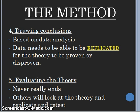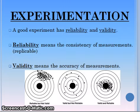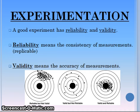We'll talk about this when we look at specific studies in class. Experimentation has to be replicable — other researchers can and should retest your procedure and get a valid outcome. We also look at the ecological validity of an experiment: whether or not it reflects real life and whether or not it focuses on processes that can occur in real life. We always look at the reliability and validity of research. Reliability means the consistency of the measurements — you should be able to replicate research and get very similar, if not the same, data. Validity means the accuracy of the measurements; if it's not valid, it cannot be considered actual research.